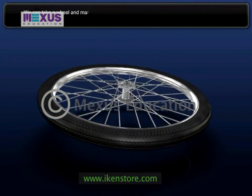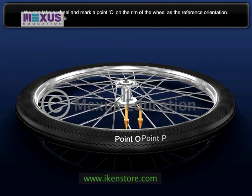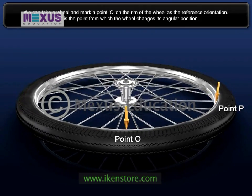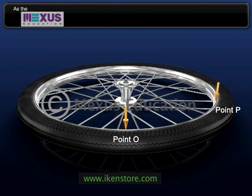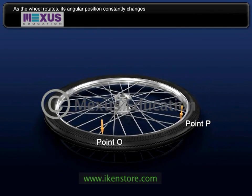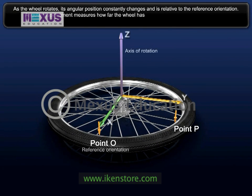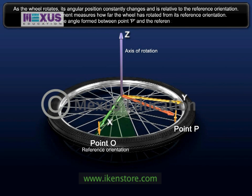We can take a wheel and mark a point O on the rim of the wheel as the reference orientation. This is the point from which the wheel changes its angular position. As the wheel rotates, its angular position constantly changes and is relative to the reference orientation. Angular displacement measures how far the wheel is rotated from its reference orientation — this is the angle formed between point P and the reference orientation O.